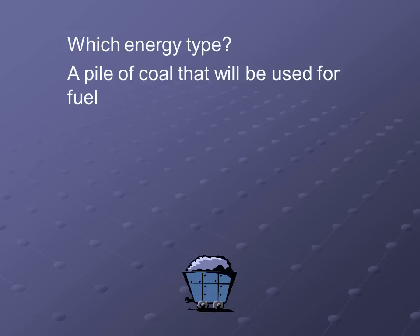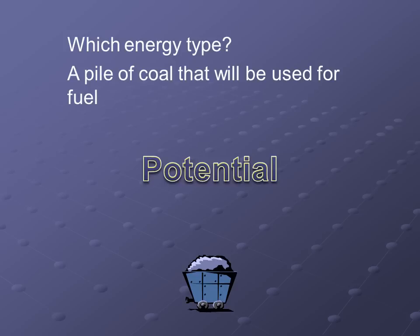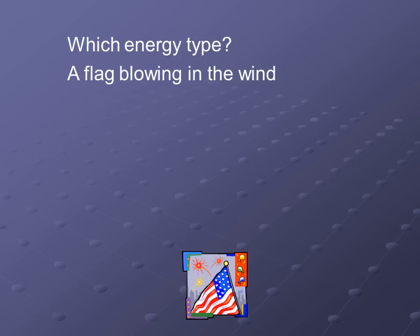For our next one: a pile of coal that will be used for fuel. The answer has to be potential — the pile of coal is not moving, it just has stored up energy. It's going to be used for energy later. Our next example is a flag blowing in the wind. The answer has to be kinetic energy, because the flag is moving in the wind — it's energy in motion.